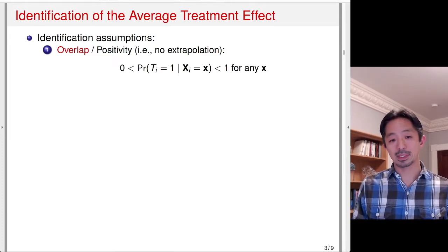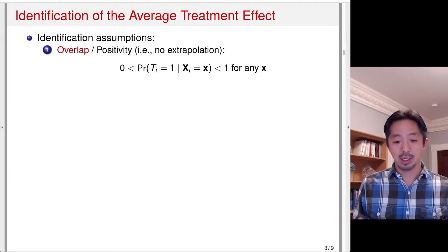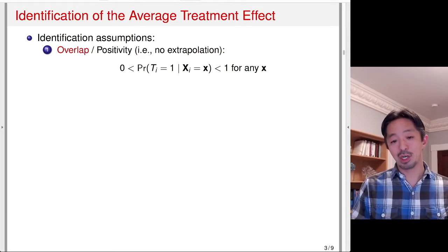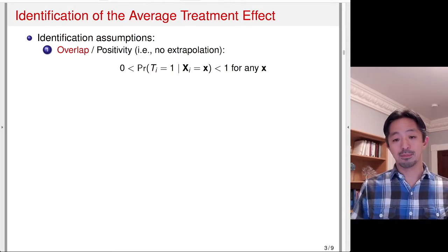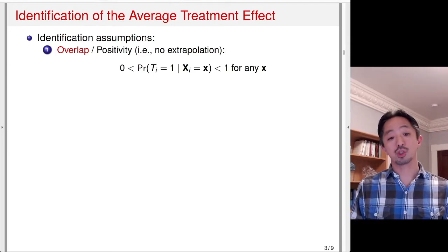The overlap assumption is often ignored, but it's very important to keep in mind. In a program evaluation, you always have to ask: are there people who are simply not eligible for this program? If there are, you need to exclude them from your analysis.